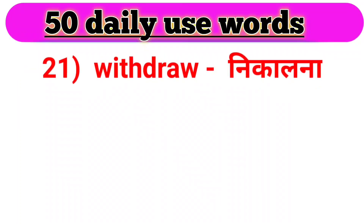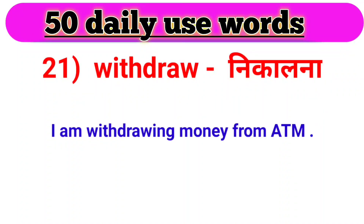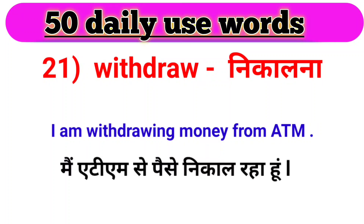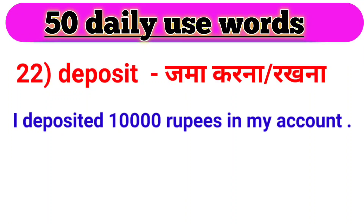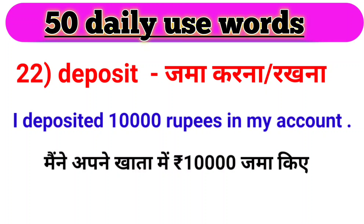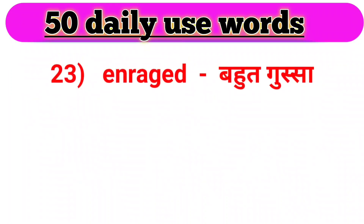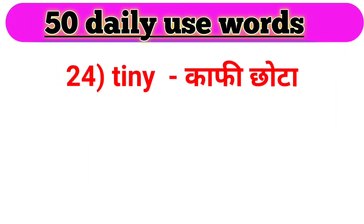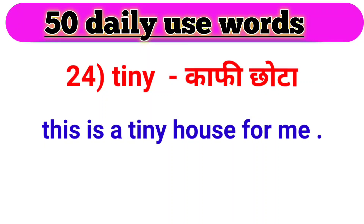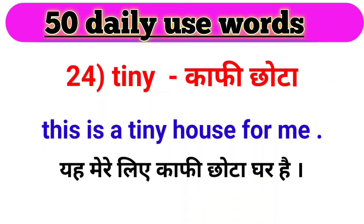Next word, we have withdraw. Withdraw ka matlab hota hai nikalna. For example: I am withdrawing money from the ATM. Main ATM se paise nikaal raha hoon. Next word, we have deposit. Deposit ka matlab hota hai jama karna ya rakhna. For example: I deposited 10,000 rupees in my account. Main ne apne khate mein 10,000 rupay jama kiye. Next word, we have enraged. Enraged ka matlab hota hai bahut gussa. For example: She is enraged at me. Woh mujh par kaafi gussa hai. Next word, we have tiny. Tiny ka matlab hota hai kaafi chota. For example: This is a tiny house for me. Yeh mere liye kaafi chota ghar hai.